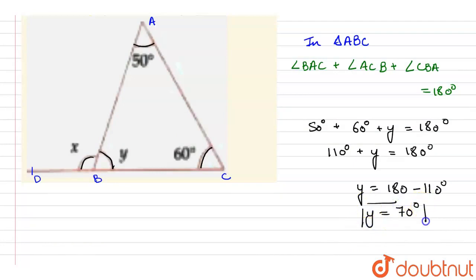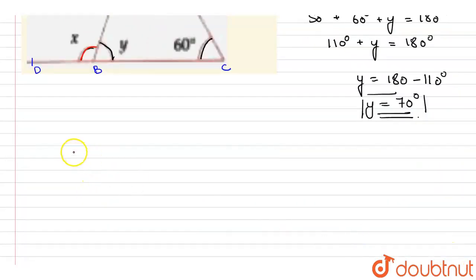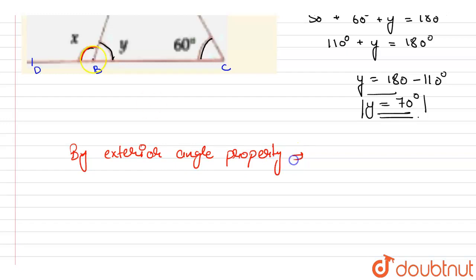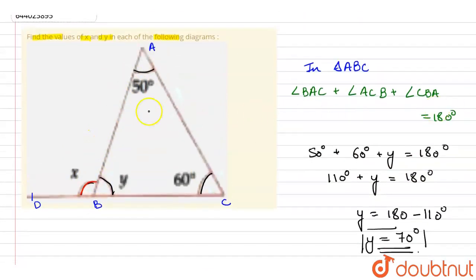So we have found the value of Y as equal to 70 degrees. Now we also need to find the value of X. We see that this particular angle X is the exterior angle of the triangle. By the exterior angle property of the triangle, angle ABD — that is this particular angle X — will be equal to the sum of the two non-adjacent interior angles, that is angle BAC and angle ACB.